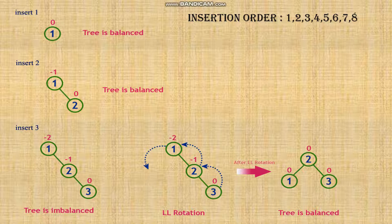Let's see an example for insertion in an AVL tree. The insertion order is 1, 2, 3, 4, 5, 6, 7, and 8. First we insert 1 — the tree is balanced. Then we insert 2; since 2 is greater than 1, it becomes the right subtree of 1 — still balanced. Now we insert 3; since 3 is greater than 2, it becomes the right subtree of 2 — the tree is now imbalanced because the balance factor of 1 is -2. That is the right-right case, so we perform a left rotation. 1 becomes the left subtree of 2. Now the tree is balanced because the balance factor of each node is 0.